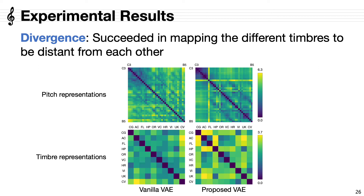Finally, these figures show the divergence for each pitch and unseen instrument. Comparing the upper left and upper right matrices, the values of the elements around the diagonal got smaller and those distant from the diagonal got larger. This indicates that our method succeeded in making latent variables of similar pitches close to each other and those of different pitches far away from each other in the latent pitch space. In the lower matrices, the off-diagonal elements of the right matrix have larger values than those of the left matrix. This result demonstrated that the proposed method succeeded in mapping different timbres to be distant from each other.